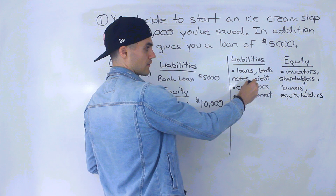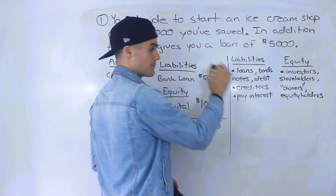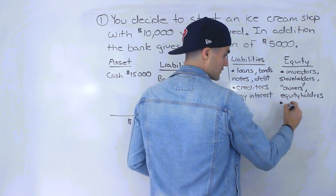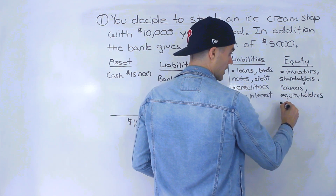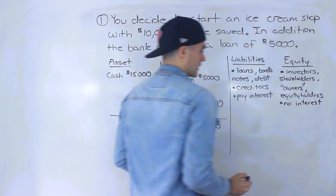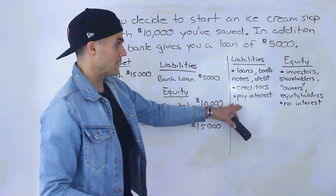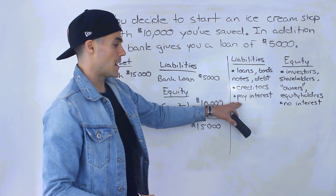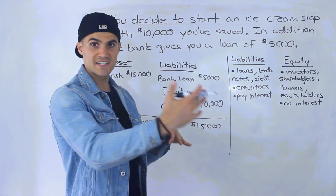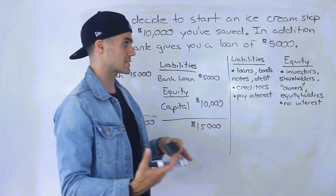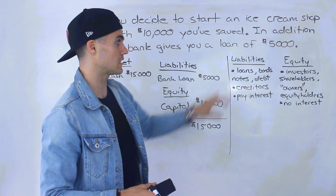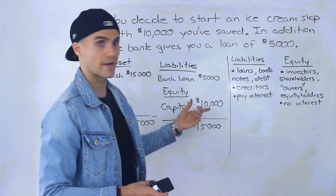Unlike the creditors under the liabilities, equity holders, shareholders, and investors don't receive interest. So going back to liabilities, the creditors are going to receive interest. So then what's the catch? What's the point of being an equity holder? Isn't it just better to be a creditor, since you're going to be receiving interest and equity holders aren't?